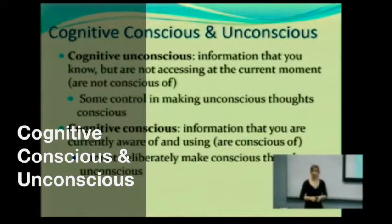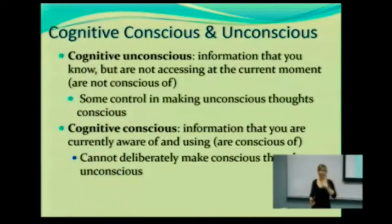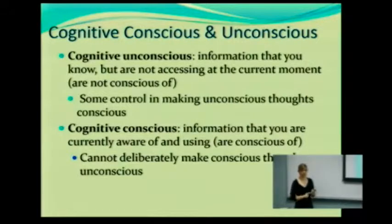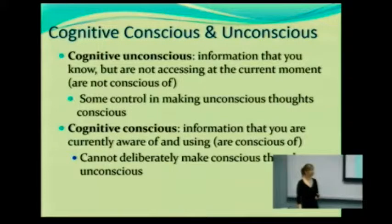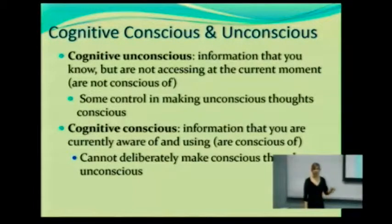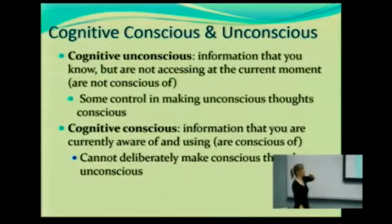Part of this is you want to look at what's called the cognitive conscious and cognitive unconscious, because when we get information, we process it in very different ways, depending on what type of information it is and what we're going to do with it. The cognitive unconscious is information that you know but are not accessing at the current moment — in other words, you're not conscious of it.